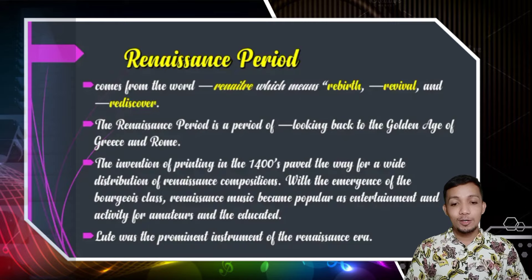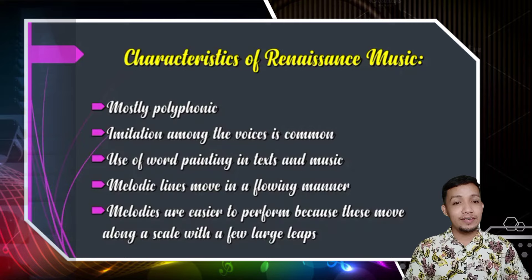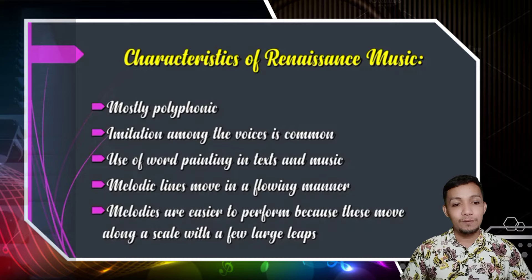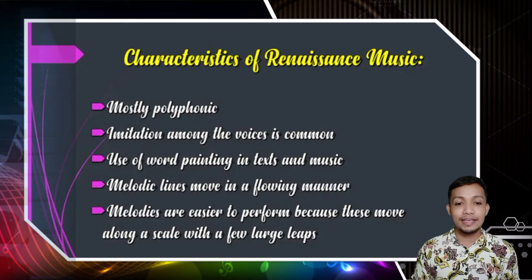There are different characteristics of Renaissance music. First is mostly polyphonic. Second, imitation among the voices is common. Third, use of word painting in texts and music. Fourth, melodic lines move in a flowing manner. Fifth, melodies are easier to perform because these move along a scale with few large leaps.